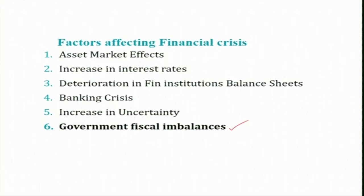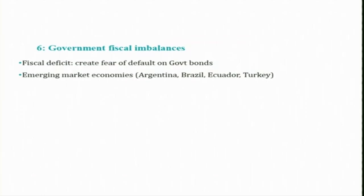Coming to government fiscal imbalances — especially when government deficit happens, that means the borrowing requirements of the government. When the fiscal deficit keeps on increasing over time, most governments finance by raising funds to cover up the fiscal deficit by borrowing from the market, mainly by issuing bonds.